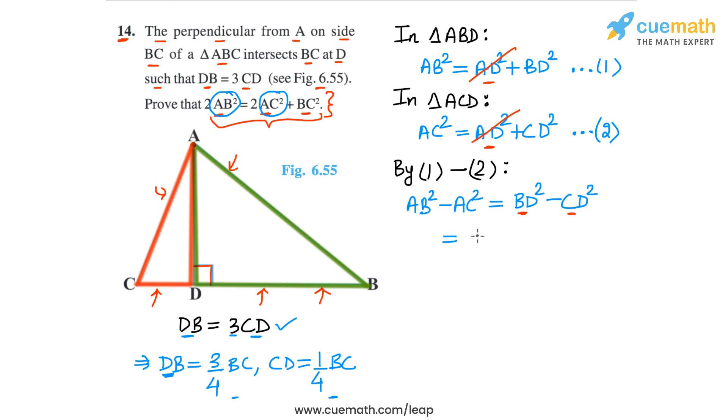This will give us, instead of BD square, we write (3/4 BC) whole square minus instead of CD, (1/4 BC) whole square. So what do we get? We get 9/16 BC square minus 1/16 BC square.